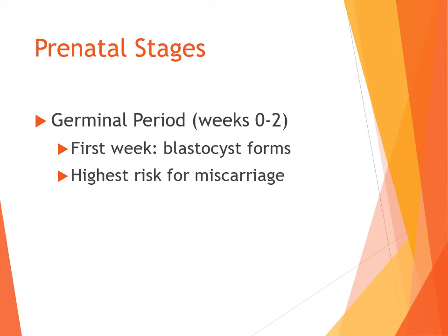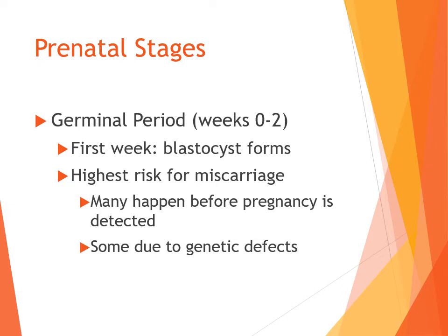The germinal period carries the highest risk for miscarriage, and a lot of women don't even know they're pregnant when a miscarriage happens during this period. It's often before they miss their menstrual period and before urine tests can detect pregnancy. A lot of miscarriages at this stage are due to genetic defects — the body detects the blastocyst won't develop into a viable fetus, and releases it.